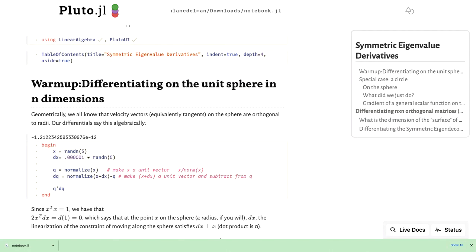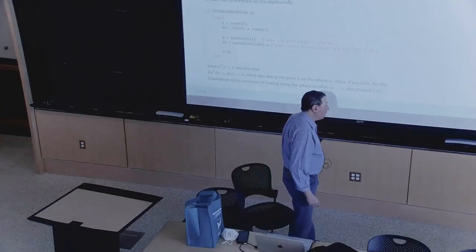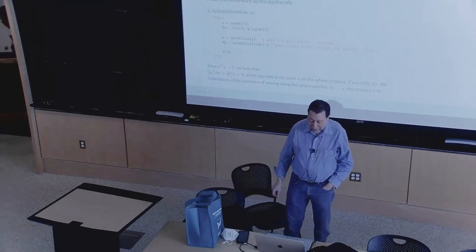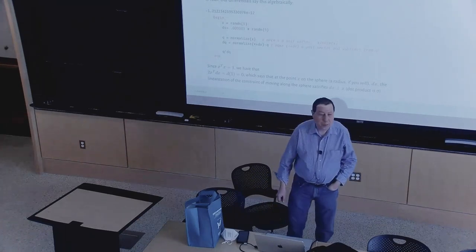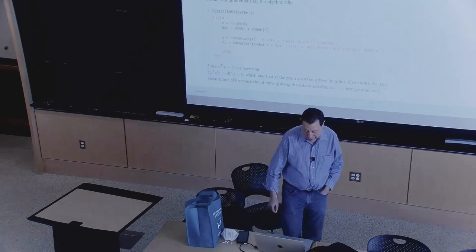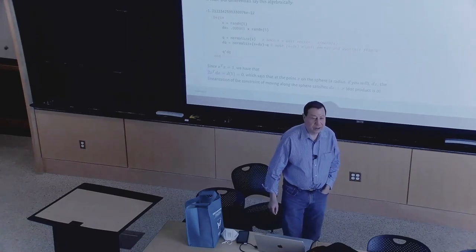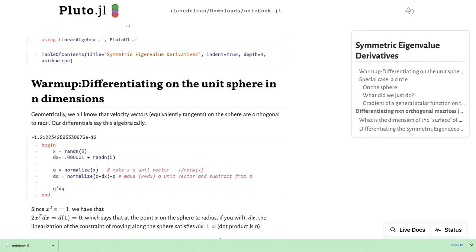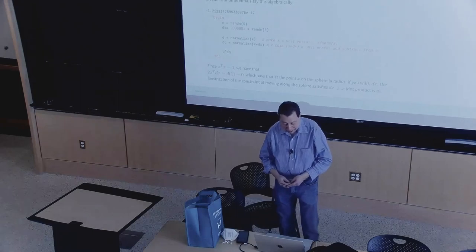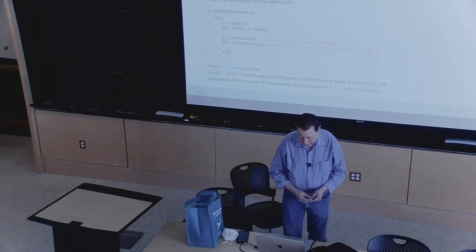Ultimately, I want to think about orthogonal matrices — you all know what orthogonal matrices are, Q transpose Q is the identity. But kind of to go slowly, and as a bit of a warm-up, let me just talk about differentiating on the unit sphere. The sphere is like a baby version of an orthogonal matrix — it's one column of an orthogonal matrix. So let's talk about being on the sphere.